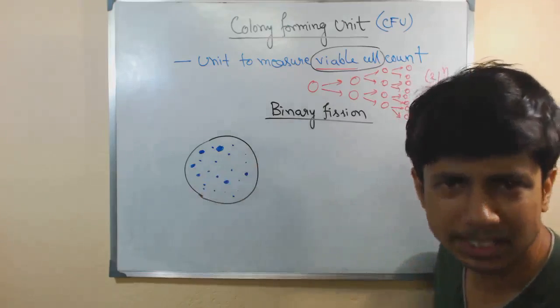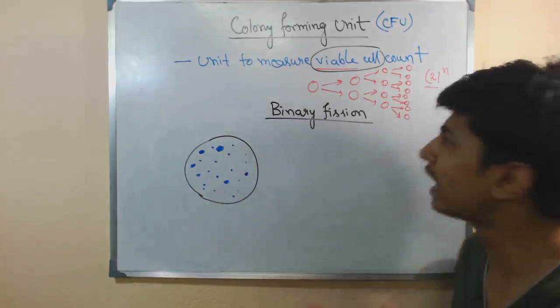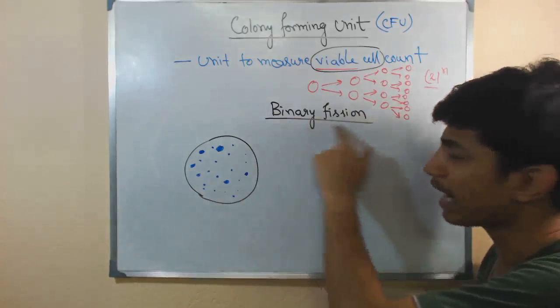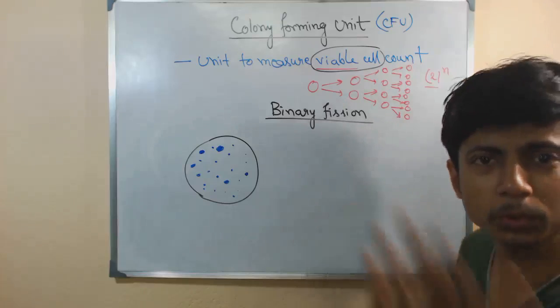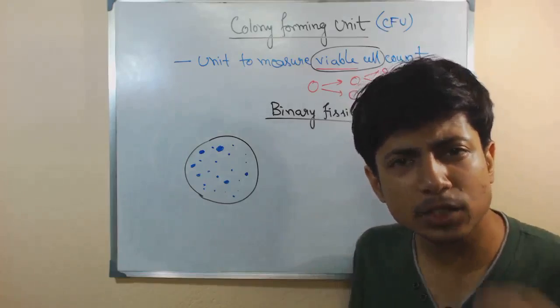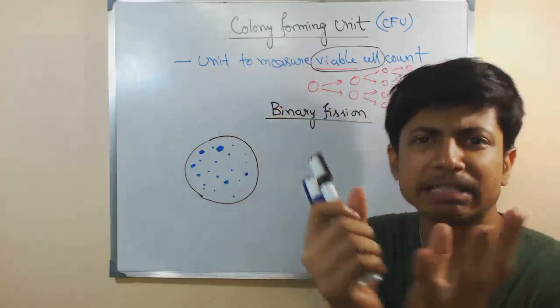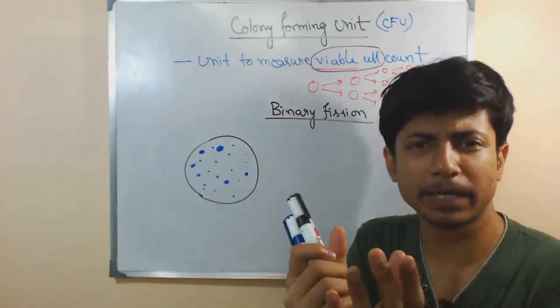If there's only one bacteria, two bacteria, three bacteria, five, ten bacteria, we cannot see that with the naked eye. But once the bacteria start to grow and divide in an exponential manner by binary fission—from one to two, two to four to eight—they start growing rapidly and soon all those bacteria start to aggregate in a place, and we can actually see them from outside. That is called a colony.